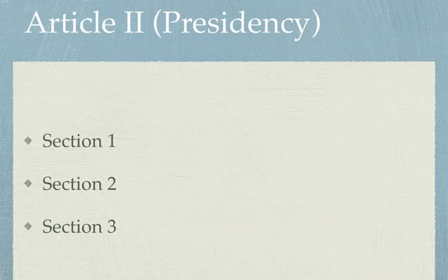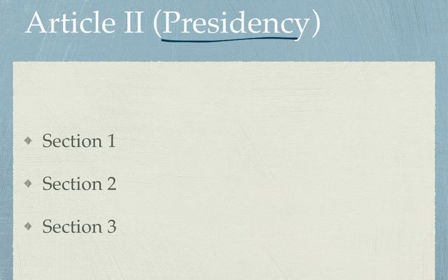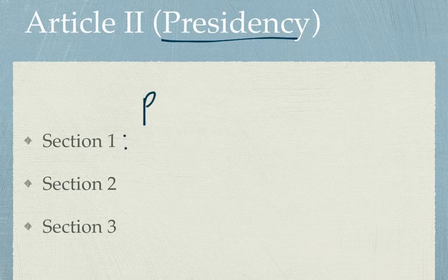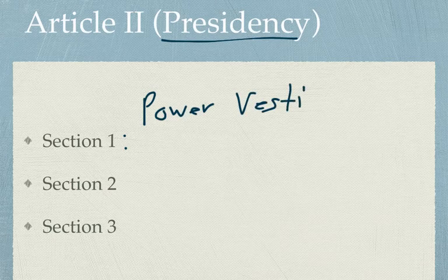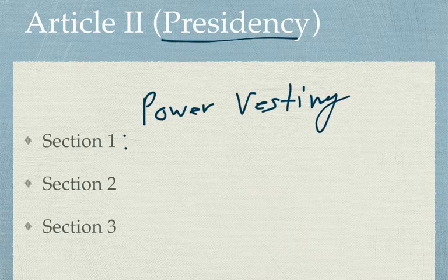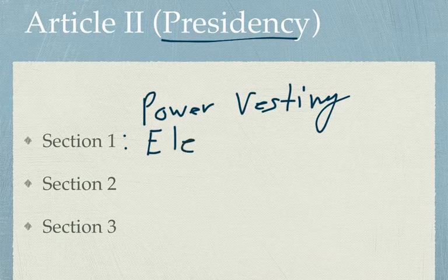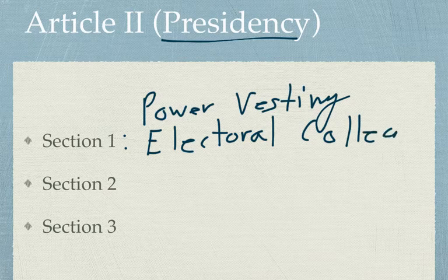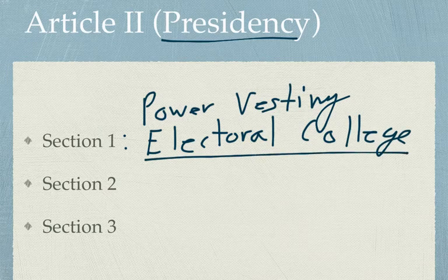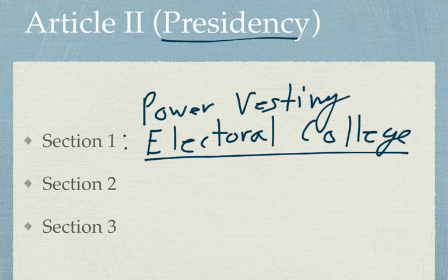Article 2 deals all about the presidency and is a much shorter section. Article 2, Section 1 deals with presidential power — power will be vested in a president — and we'll talk more about this vesting clause in our lectures on the presidency. Article 2, Section 1 also gives us the method of election for president, which is the electoral college. You do not vote directly for the President of the United States. You vote indirectly for the people who will vote for the President — that indirect method of election is called the electoral college, found in Article 2, Section 1.